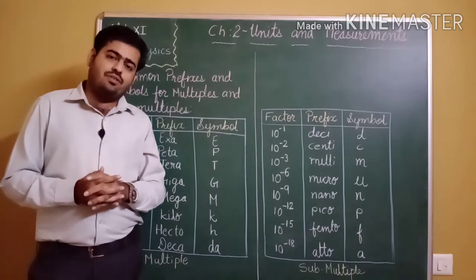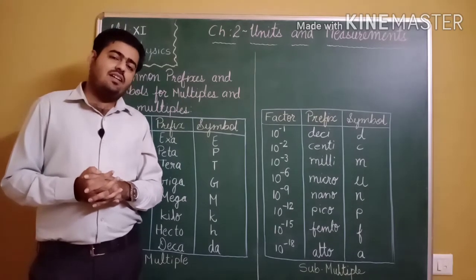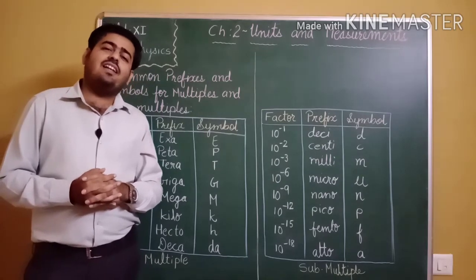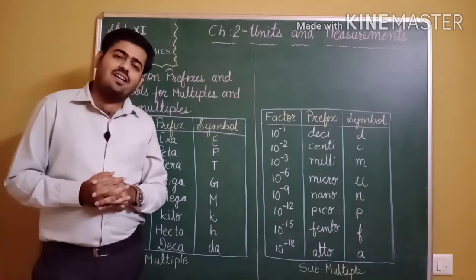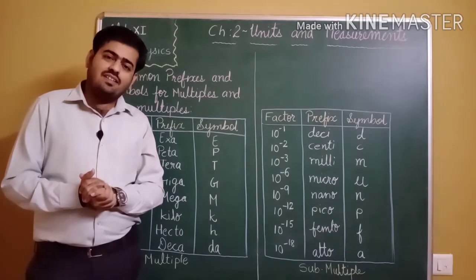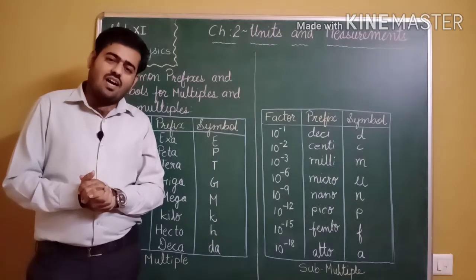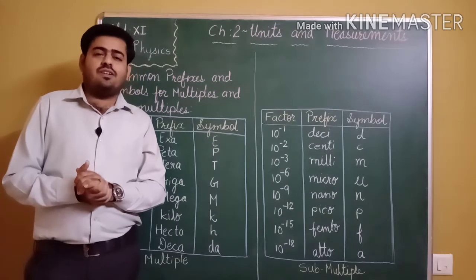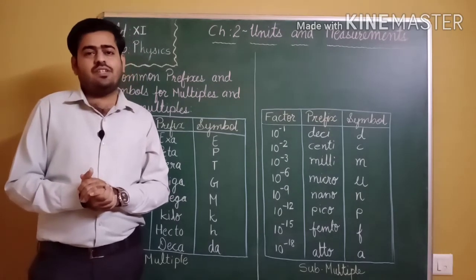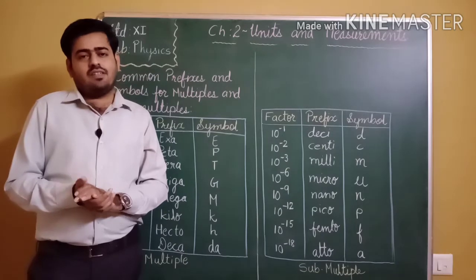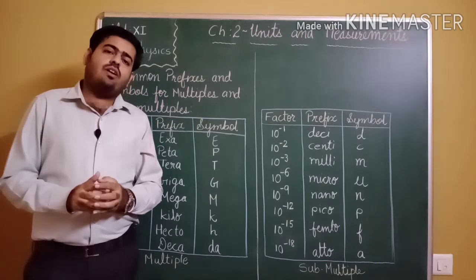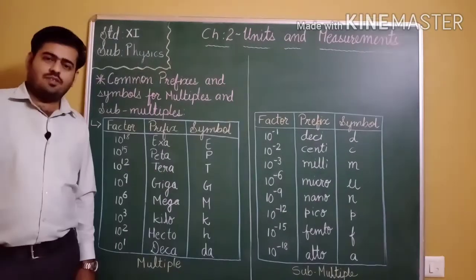We also studied two supplementary units: plane angle theta and solid angle omega. The formula for plane angle theta is length of arc upon radius. The formula for solid angle is intercepted area upon square of radius. The unit of plane angle is radian (symbol: rad) and the unit of solid angle is steradian (symbol: sr).